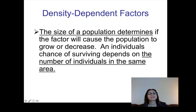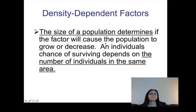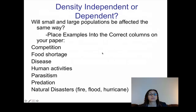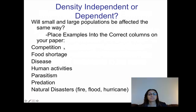There are things called density dependent factors that can cause a population to change. With density dependent factors, the size of the population is very important — small populations are not going to be affected the same way as large populations. The size of the population determines if the factor will cause it to grow or decrease. A density independent factor, on the other hand, doesn't care about population size — it's going to affect the population regardless. Pause the video and place the examples into the correct columns on your notes.